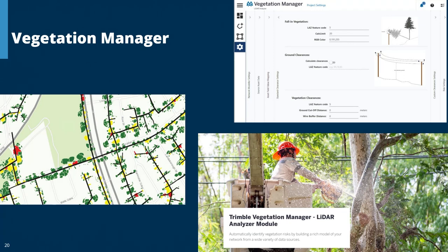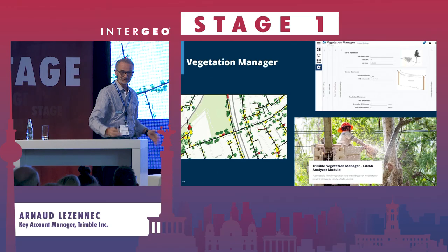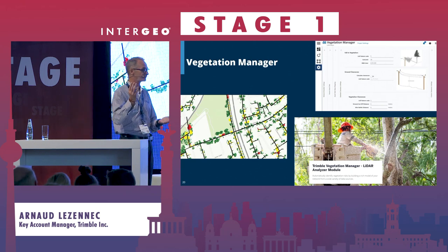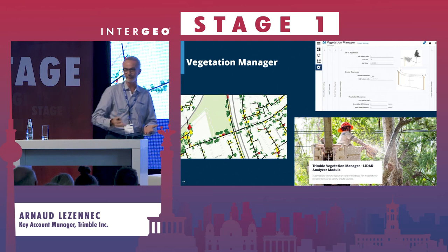The last slide is about Vegetation Manager, a solution we have in Trimble. Once a tree has grown, after doing a mobile mapping survey you get a LAZ file. We can run simulations: if a tree falls, will it hit the pole or wires? What is the safety distance? We can also analyze the clearance between the ground and the lowest cable. Sometimes, unfortunately, trees have to be cut — it also depends whether you love trees — but a tree could collapse before a storm, so it may be safer to cut it beforehand.